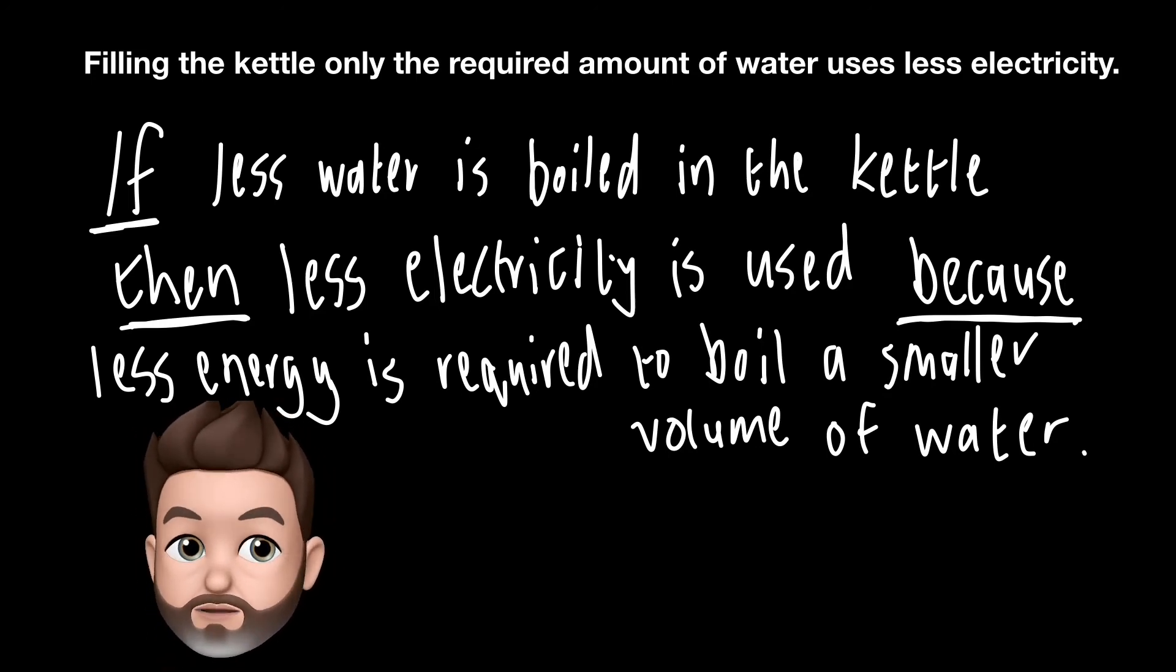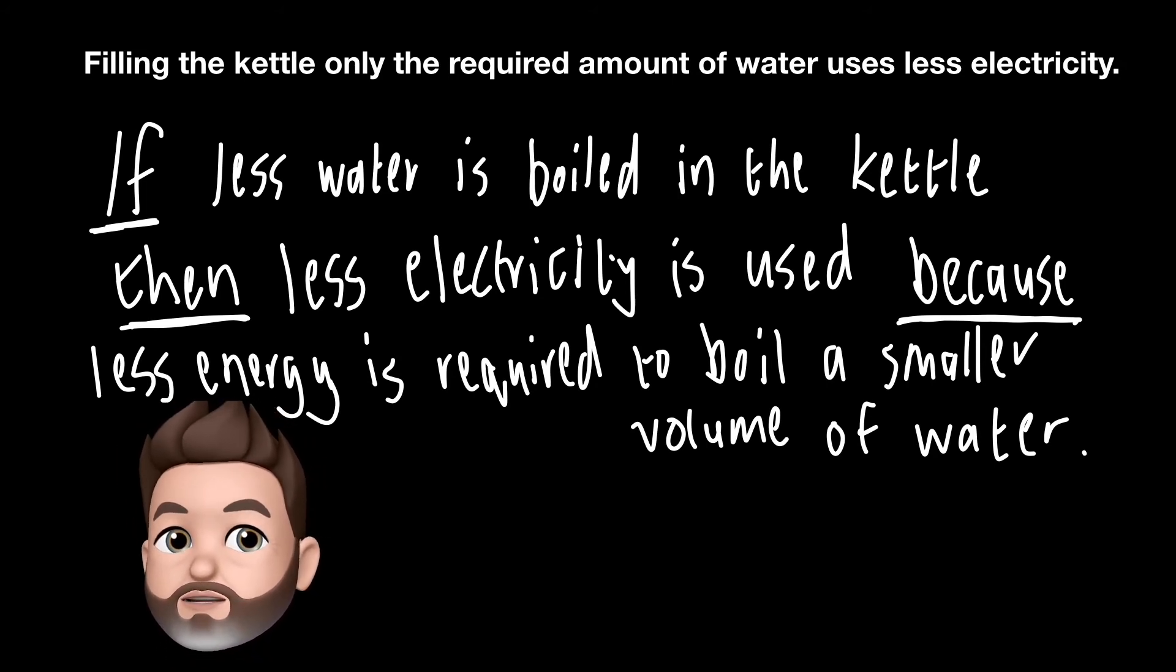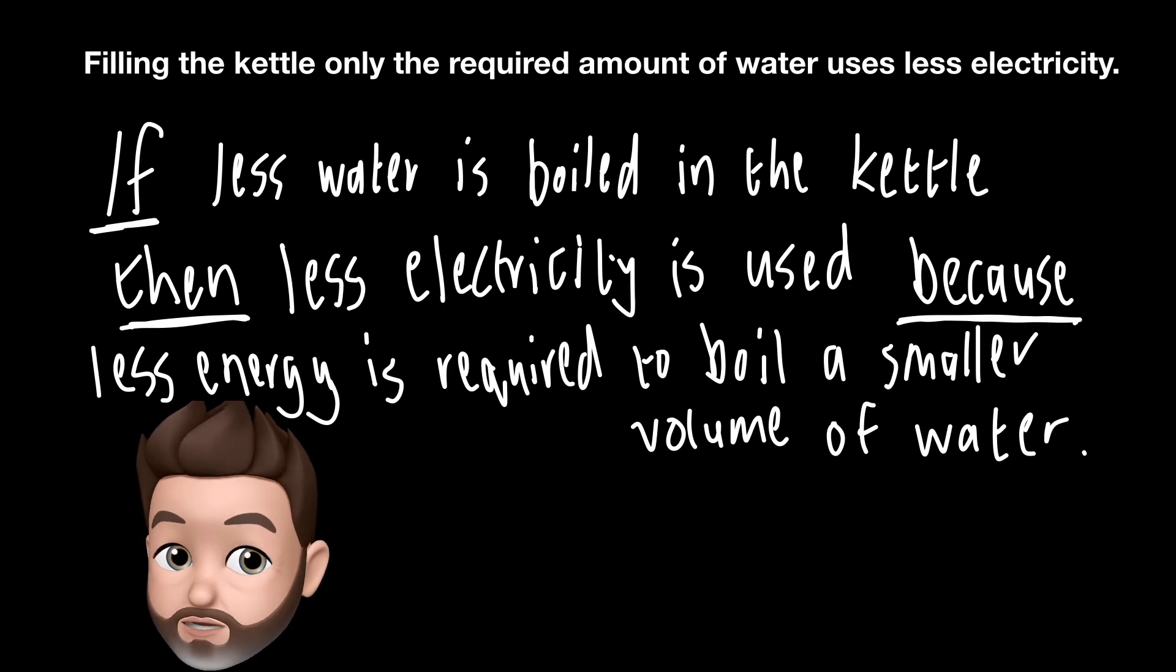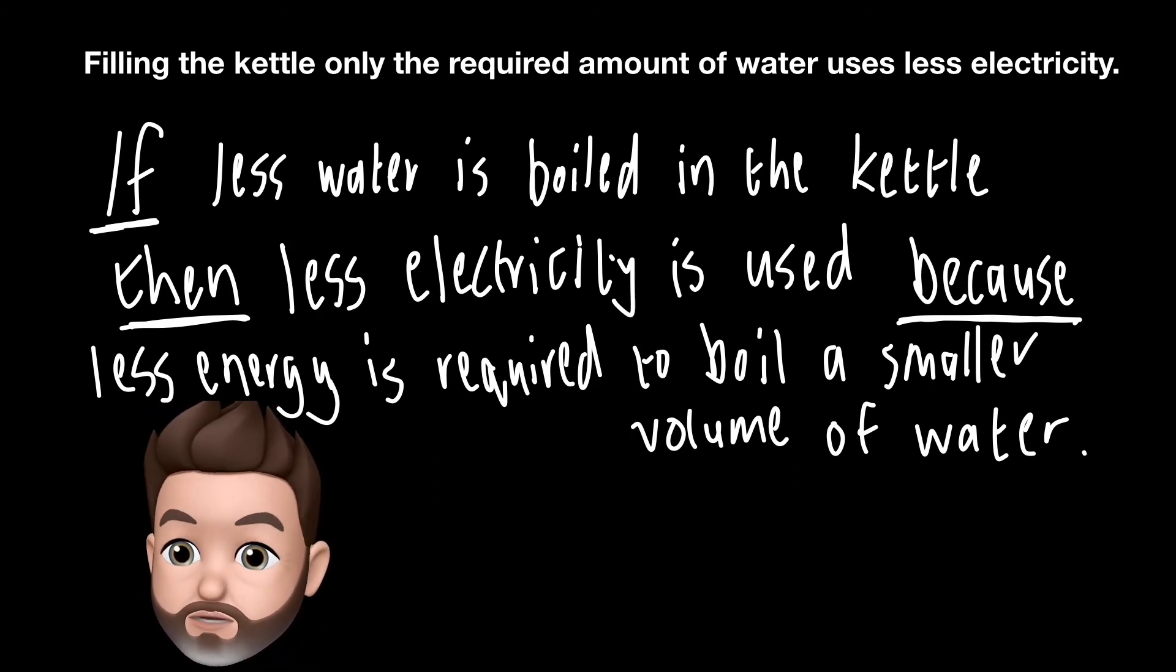So how do we turn our hypothesis into a prediction? If less water is boiled in the kettle, then less electricity is used, because less energy is required to boil a smaller volume of water, perhaps? We don't know for sure. Remember, the whole aim of science is to test this by experimentation.